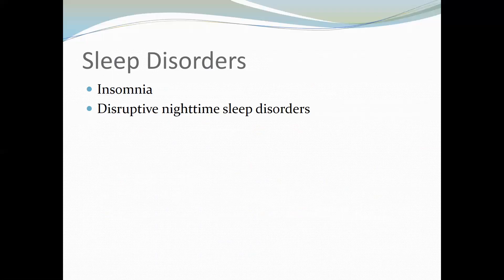Disruptive sleep disorders include problematic breathing, limb movements, and REM behavior disorder. Older adults with sleep disorders have increased diagnoses of chronic illness, take more medications, and have more psychiatric disorders. A major reason is that age tends to reduce the synchronization of circadian rhythms, causing older adults to go to sleep earlier, wake up earlier, and experience more disordered sleep.